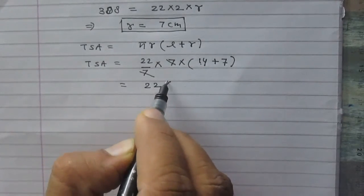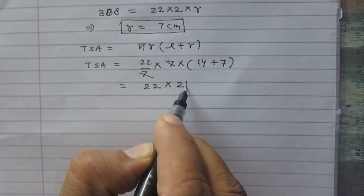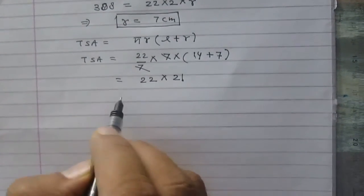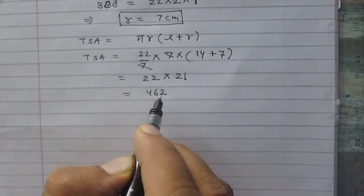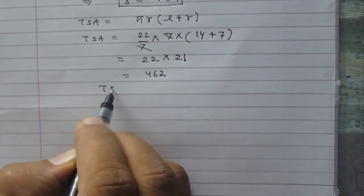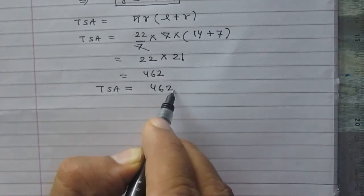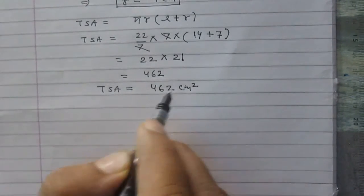So it is 22 × 21. After calculation, you will get 462. So you can say that the total surface area of this cone is 462 cm².